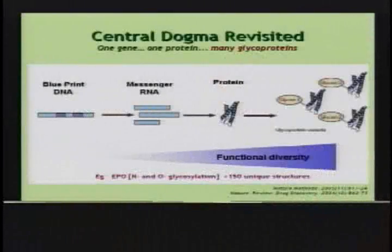It is fair to say that as a consequence of our understanding of carbohydrates attached to proteins — the fact that you have one gene, one protein, and many glycoproteins — the central dogma has truly been revisited. You're now able to get a huge amount of functional diversity by using combinations of different carbohydrates attached to proteins, and as I walk through some examples, you'll begin to see why these kinds of modifications play a role in biological function.